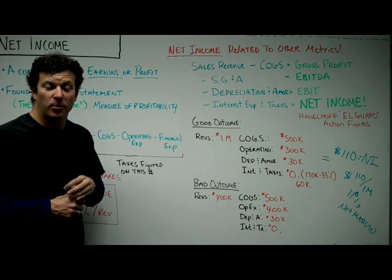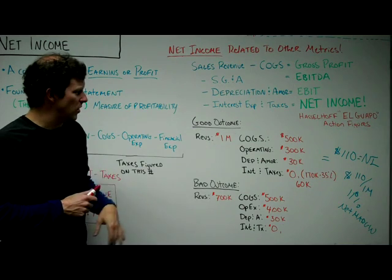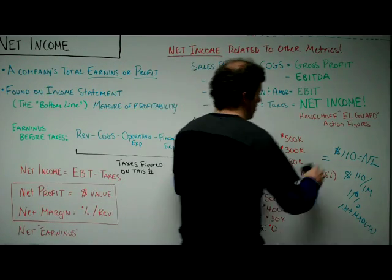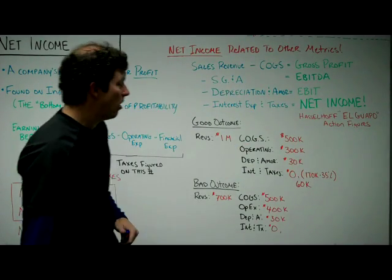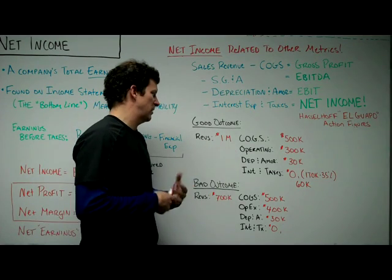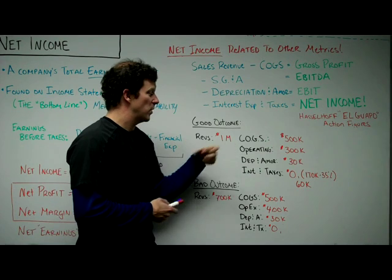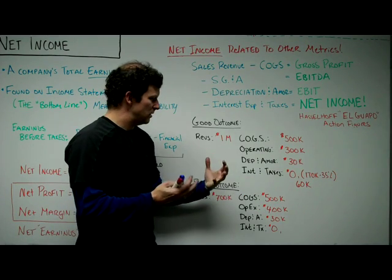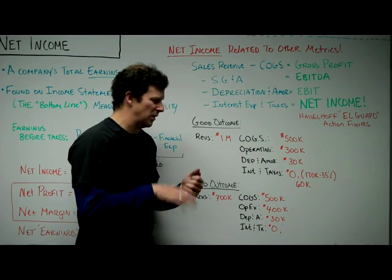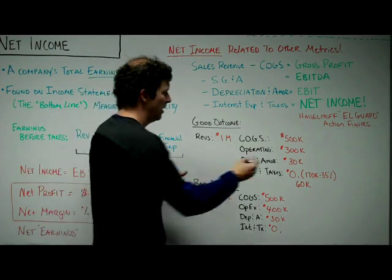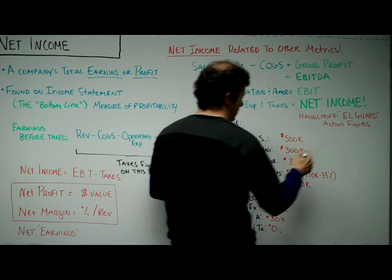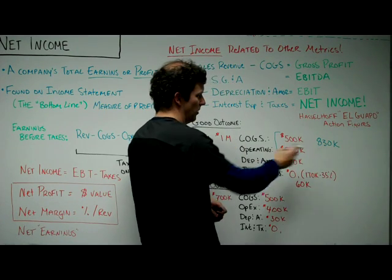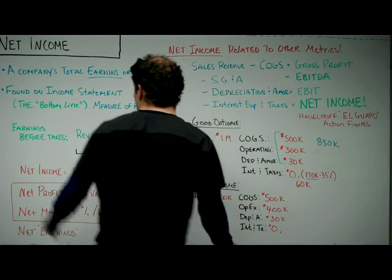Good outcome: the figures sell really well in Europe, we sell out of inventory — a million dollars in revenue. The cost of goods sold, meaning how much we paid to make the dolls, was 500 grand. Operating expenses — sales, travel, advertising, offices — were 300 grand. We had 30,000 in depreciation on equipment, and zero in interest because we didn't borrow any money. So total expenses: 500 plus 300 plus 30 is 830 grand, and with a million in revenue we have 170 grand in earnings before taxes.